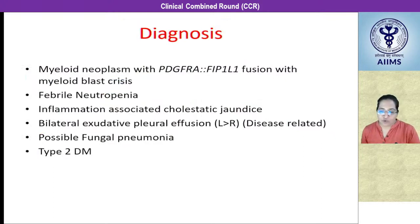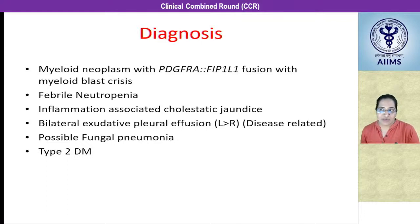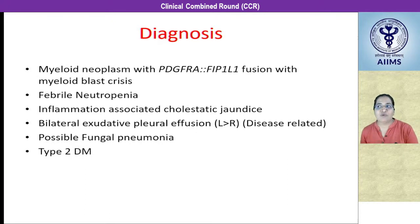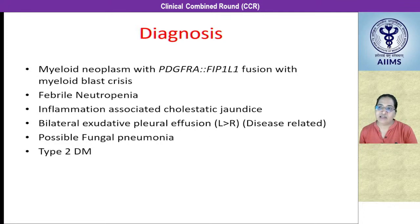Our final diagnosis was a myeloid neoplasm with PDGFRA FIP1L1 fusion with myeloid blast crisis, febrile neutropenia, inflammation-associated cholestatic jaundice, bilateral exudative pleural effusion left more than right mostly secondary to disease, possible fungal pneumonia, and type 2 diabetes mellitus. Once started on imatinib, the patient's liver function improved, kidney function improved, blood counts and constitutional symptoms improved. However, mid-treatment, he started developing respiratory distress with gross left-sided pleural effusion causing mediastinal shift to the right, requiring ICD insertion.